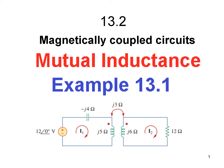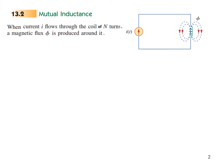In this video we will discuss mutual inductance from chapter 13, magnetically coupled circuits, and we will also discuss example 13.1. When a current I flows through a coil of N turns, a magnetic flux phi is produced around it.